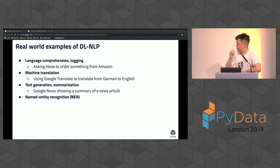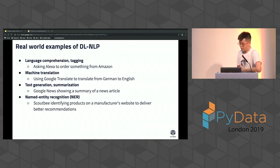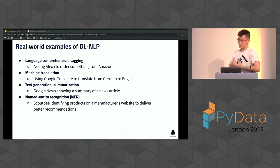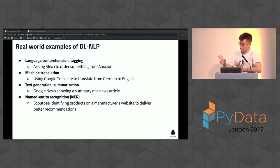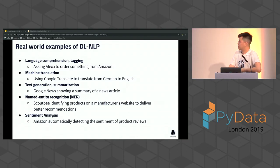Named entity recognition (NER) — we use this a lot at ScoutBee. We get a lot of free text from anywhere, and we try to identify what is what: is it a company name, a product name? NER does tagging for positions, saying this is the class you've defined — for example, a company name — and then you can extract that part out. Sentiment analysis is also a use case: is it a positive review or a negative review? This focuses on text classification, which we'll also introduce.